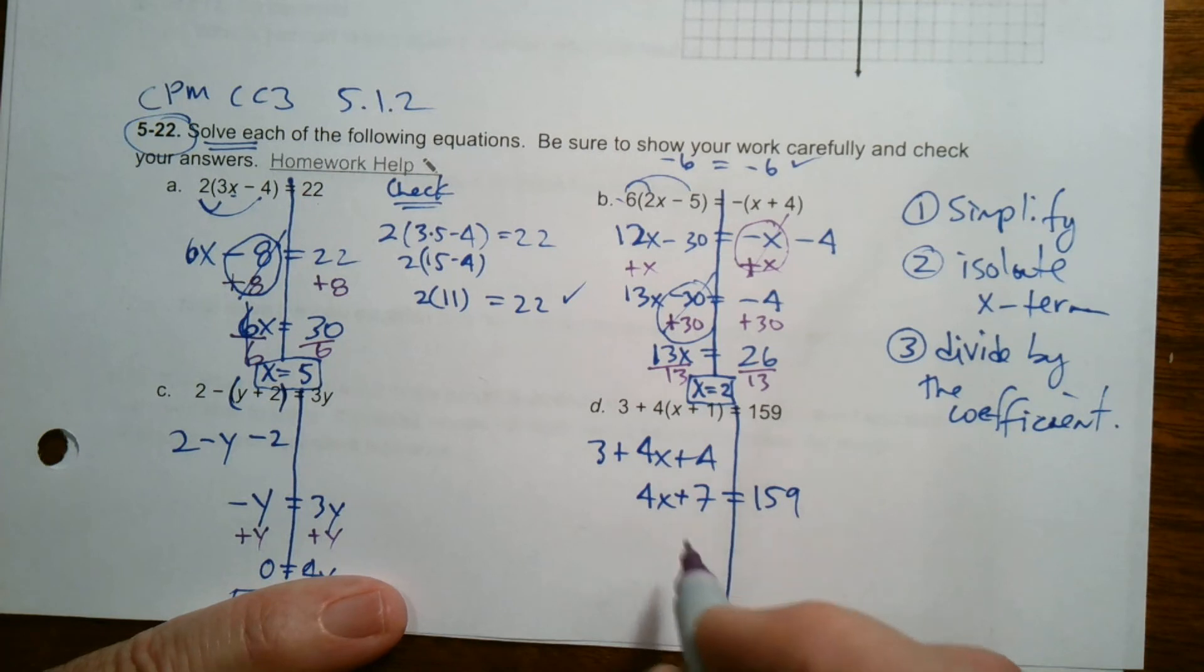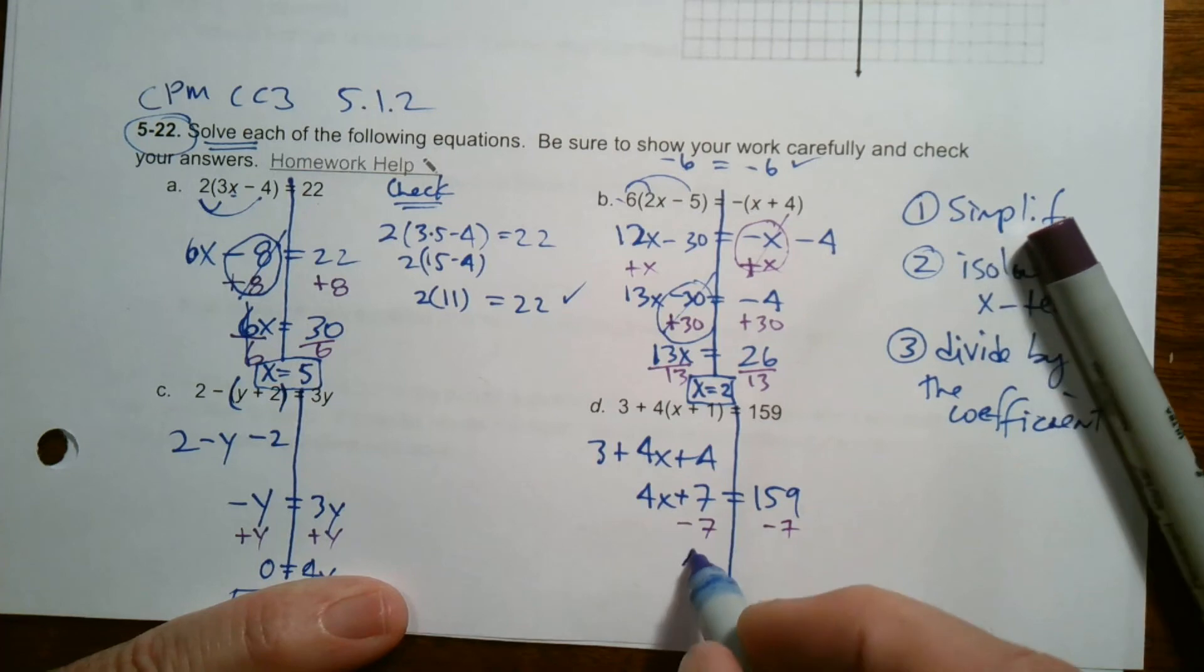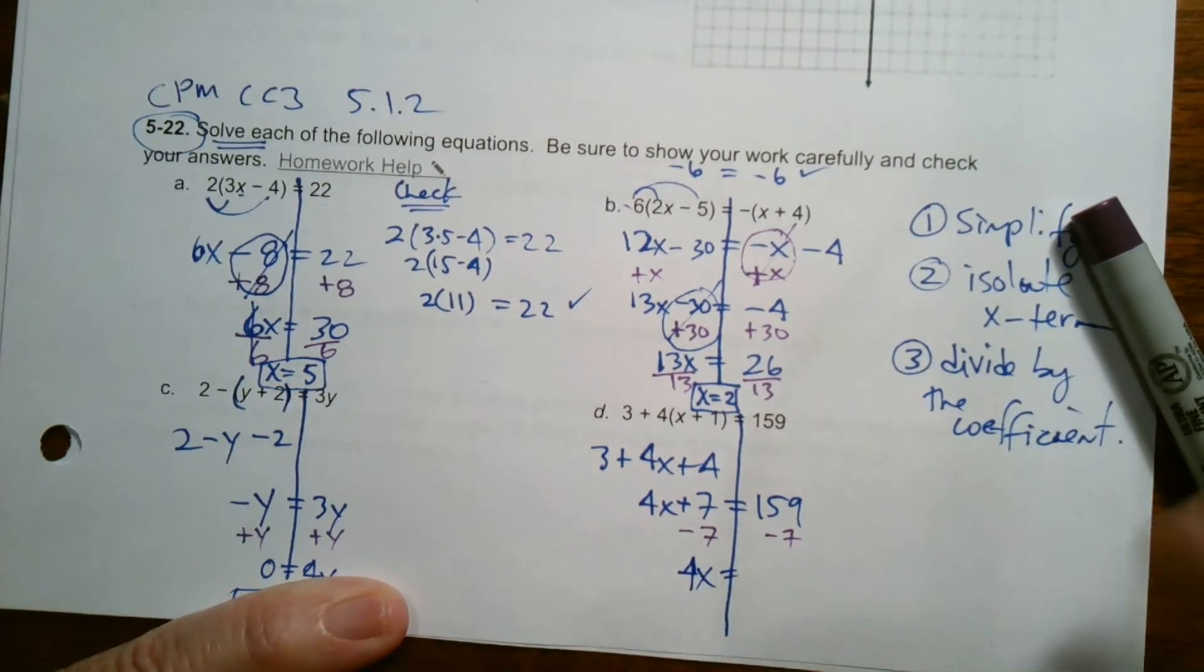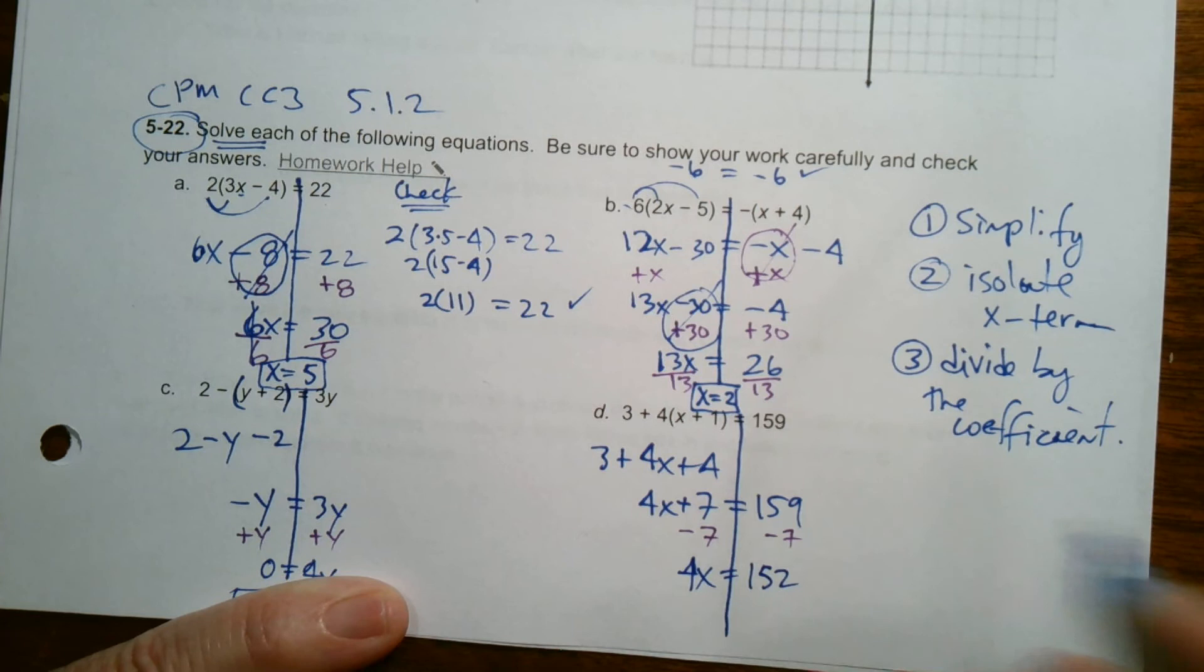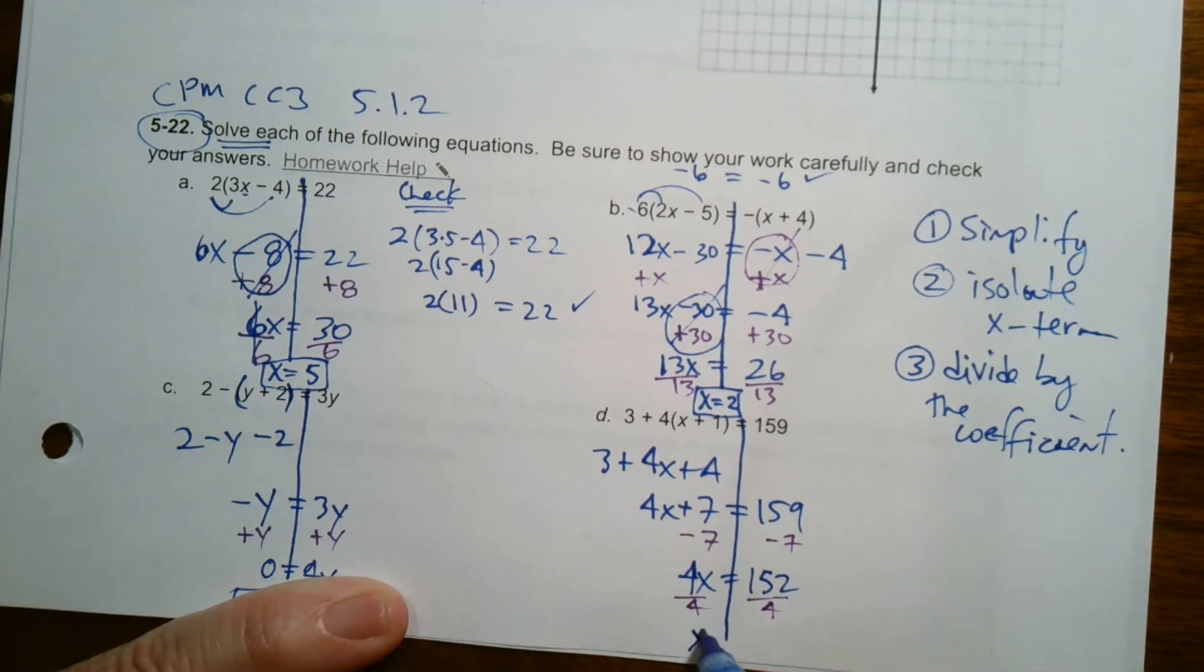Now isolate the X term. So in this case subtract seven from both sides. Those sevens cancel, so we have four X is equal to, let's see, that's 152 when I subtract seven. And divide by the coefficient, I'm on step three, divide by the coefficient. So I've just got to figure out what is 152 divided by four. Let's see, it goes in there three, so 38 I believe. Yep, 38. So there's my X equals 38.